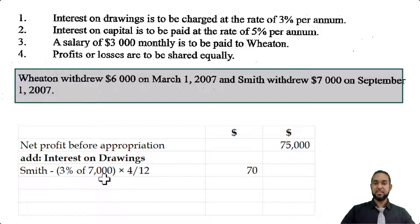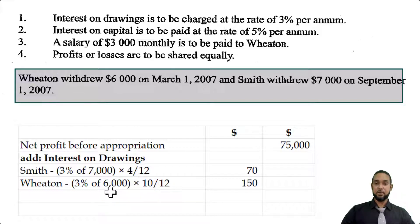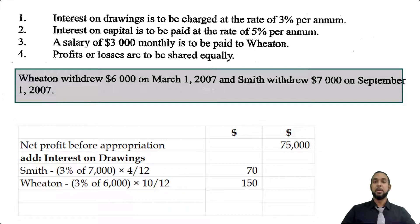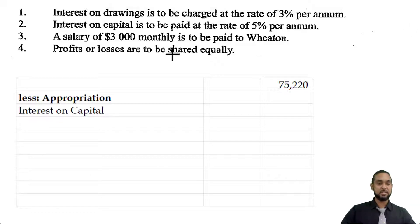For Smith: 3% of $7,000 multiplied by 4/12, because Smith's drawings were taken out on September 1st and were only outstanding for four months — September, October, November, and December. That gives us a straight $70. For Wheaton: 3% of $6,000 multiplied by 10/12, because Wheaton took out drawings on March 1st — outstanding for March, April, May, June, July, August, September, October, November, December — a full 10 months out of 12. That gives $150. The total interest on drawings is $220, which we add to the $75,000 net profit to get $75,220 to be appropriated.